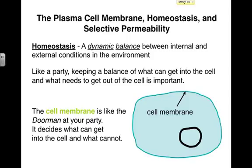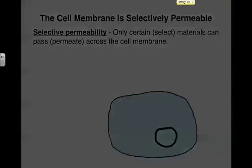We think of the cell membrane like a bouncer or a doorman at your party. Obviously, when you're hosting a party, there are certain people that you want to invite and come in, and certain people you'd rather not let in. The cell membrane is behaving in the same basic way — it allows some things to get into the cell, allows some things to get out, but it's also preventing certain molecules from getting in or out. It's acting as the doorman; it ultimately decides what can get in and what cannot.